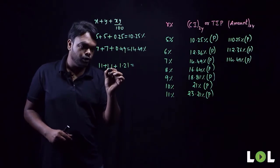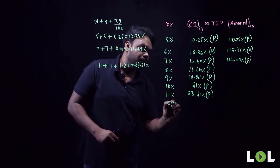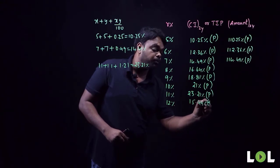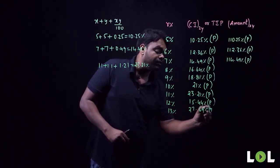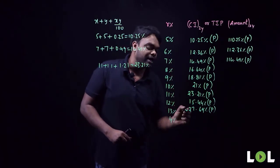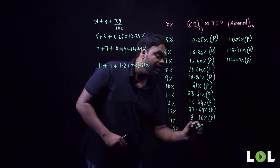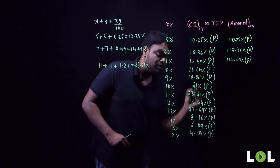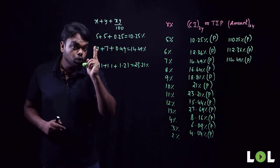For 12 percent: 12 + 12 + 144/100 = 24 + 1.44 = 25.44 percent of principal. For 13 percent: 26 + 169/100 = 27.69 percent. For 4 percent: 4 + 4 + 16/100 = 8.16 percent. For 3 percent: 6.09 percent. For 2 percent: 4.04 percent of principal. Like this, we must be able to calculate compound interest for two years within two seconds.